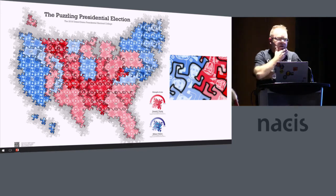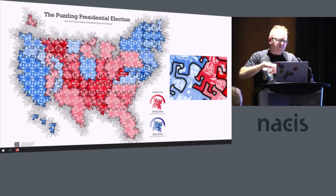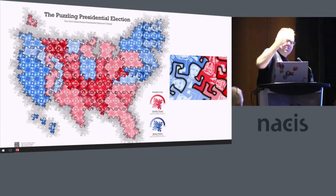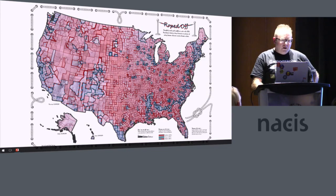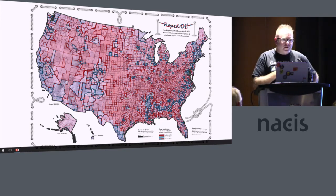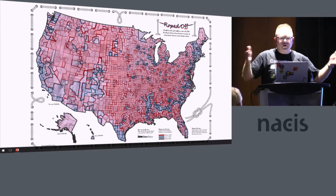I did do this for the recent elections — it was up in the gallery, called 'The Puzzling Presidential Election.' I do like the work of M.C. Escher, the Dutch artist and mathematician, and particularly his reptile tessellation. And I thought, well, I wonder if I can tessellate Trump and Clinton across this. And I could. I also used a technique that John Nelson showed me for putting rope across a map — this idea of dissimilarity between areas to show how your neighbours voted in comparison to you. Thicker rope is a larger dissimilarity.